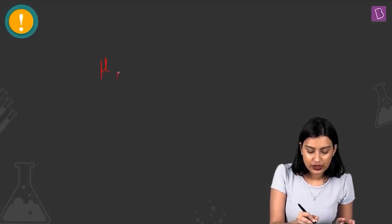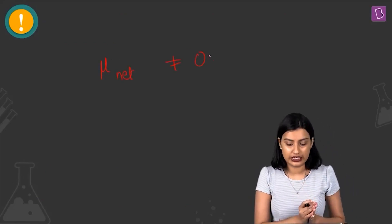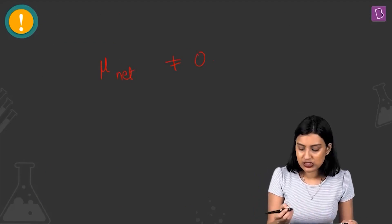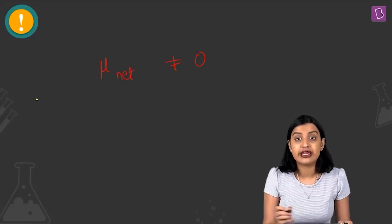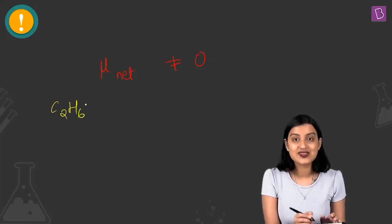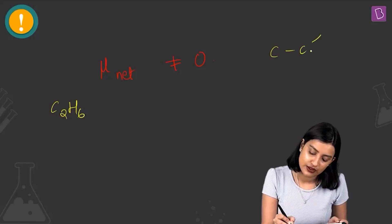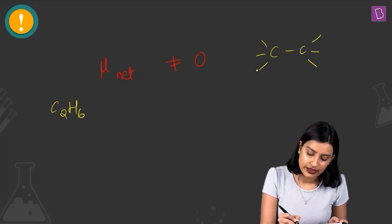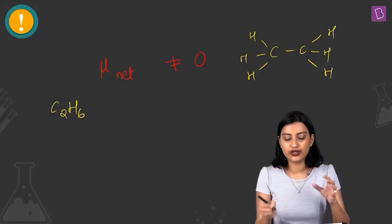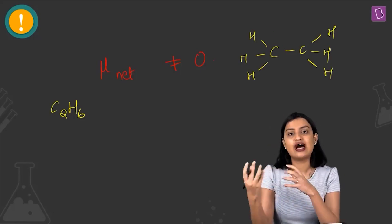The condition for polarity is that the net dipole moment μ_net must not equal zero. For C2H6 (ethane), the C–H bond has a very low electronegativity difference, and the molecule is symmetrical, so all dipole moments cancel and μ_net = 0. Ethane is non-polar.